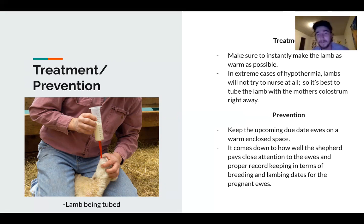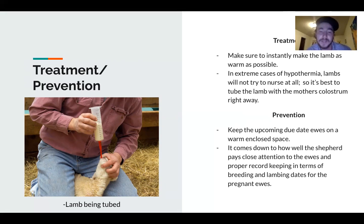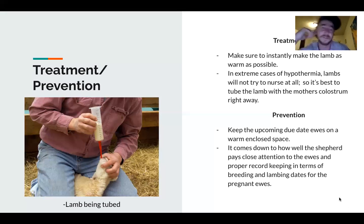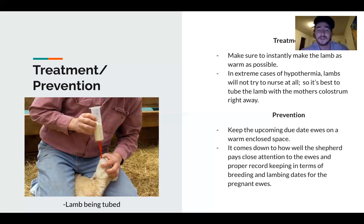Keep track of upcoming due dates for ewes and make sure ewes are in a warm enclosed space. It really comes down to how close of attention a shepherd will pay to his flock. Proper record keeping is a very important part of this industry — making sure that breeding and lambing dates for pregnant ewes are tracked so you have a good eye on them and understand when you need to make these conditions happen.